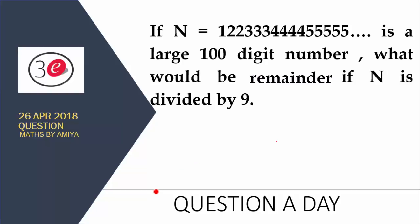Hey, hi, it's Samir. Now it's time for Question a Day, and the 26th April question is in front of you. N equals 1, 2, 2, 3, 3, 3, 4, 4, 4, 5, 5, 5, 5, 5, dot dot, means continuous numbers in the same pattern. It's a large hundred-digit number. What would be the remainder when N is divided by 9?